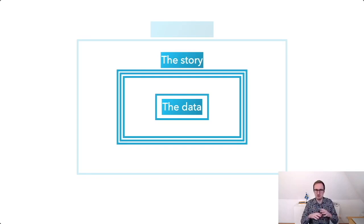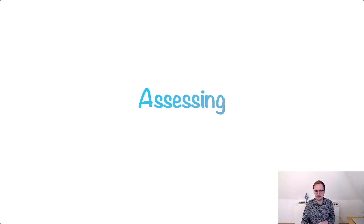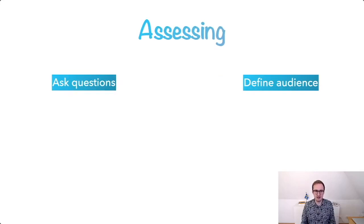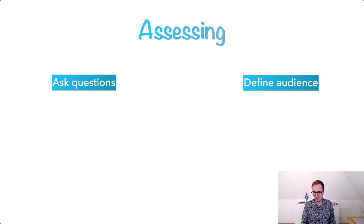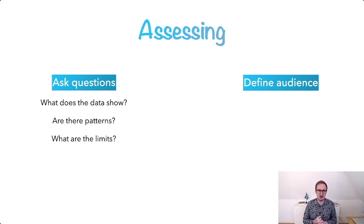Going back to that model: we have the data, we build multiple story levels around it, and there's something around the outer layer we'll return to. What does this really mean? When I do a data visualization, I have four distinct phases. Phase one is assessing: I ask questions about the dataset and at the same time I try to define my audience, because during the radio show I have no chance to see them — but I can at least make assumptions. Questions include: what does the data show? Are there any interesting patterns? Are there limits to what the data can explain?